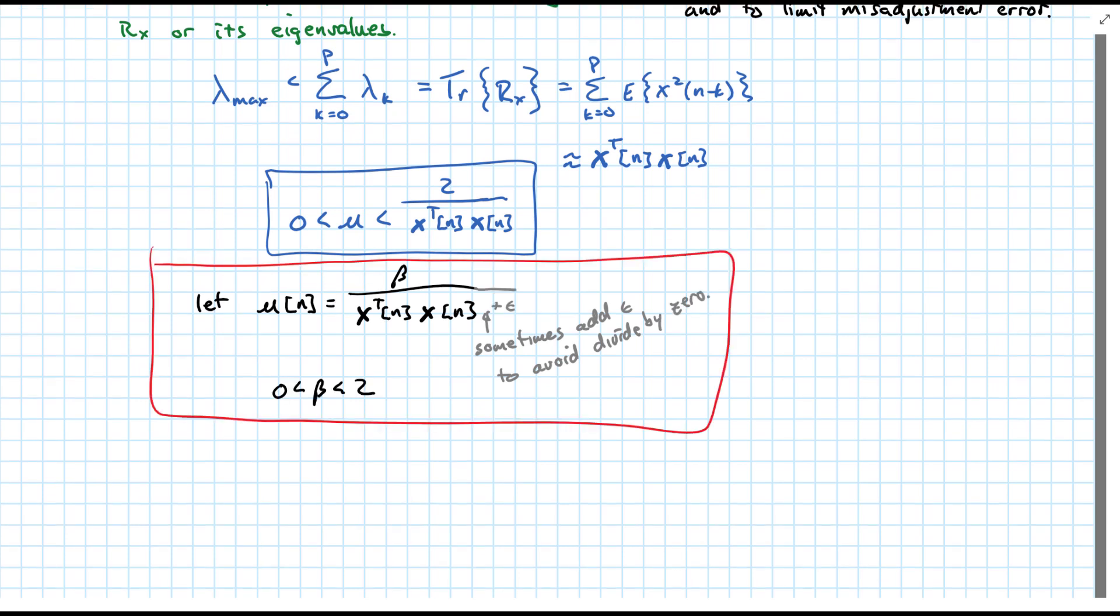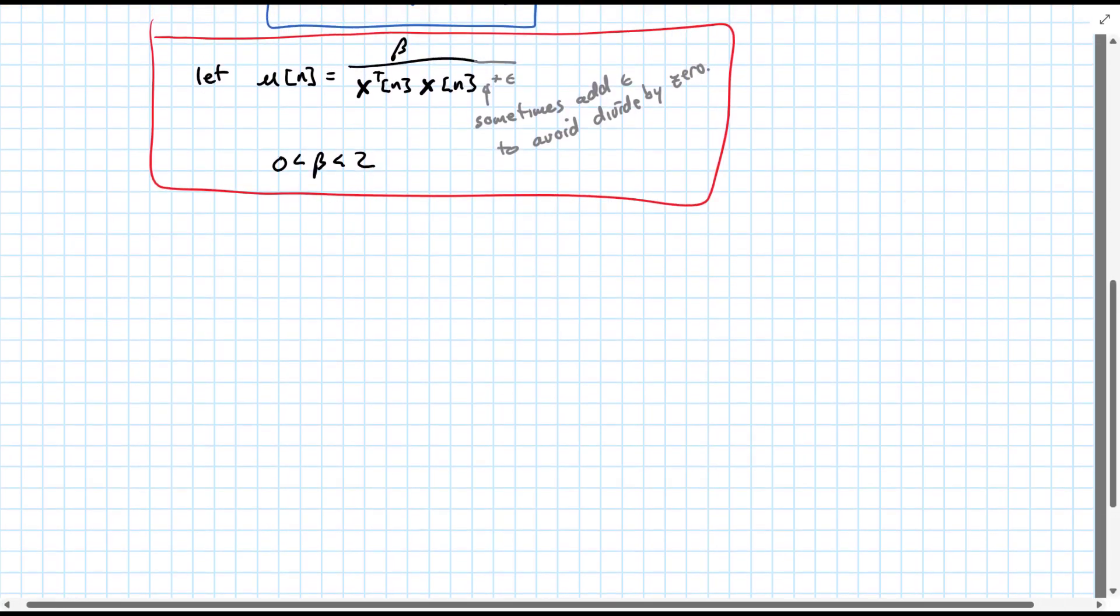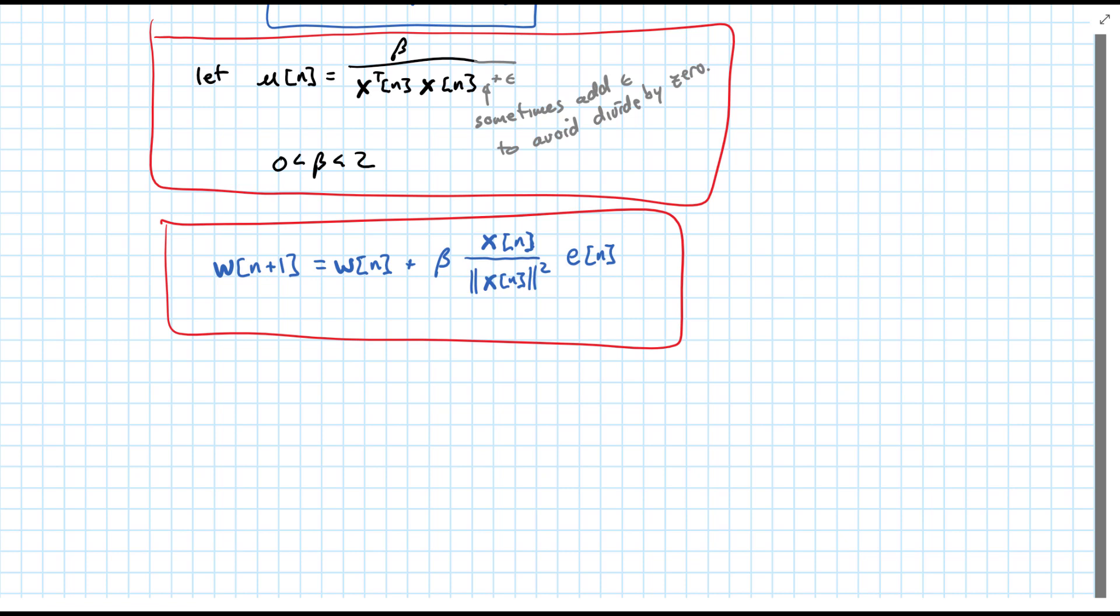Well, that's basically the normalized LMS algorithm. So let's take a look at the final weight update equation. We would have w n plus 1 is equal to...